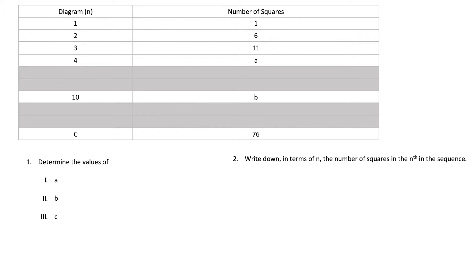We are asked to determine the values of a, b, and c, and to determine the nth term. The first column represents diagrams: diagram 1, 2, 3, 4, then the 10th diagram, then c for the unknown. In the second column we can see there is a common difference of 5, so we are counting by fives. For a, the value is going to be 11 plus 5, which is 16.